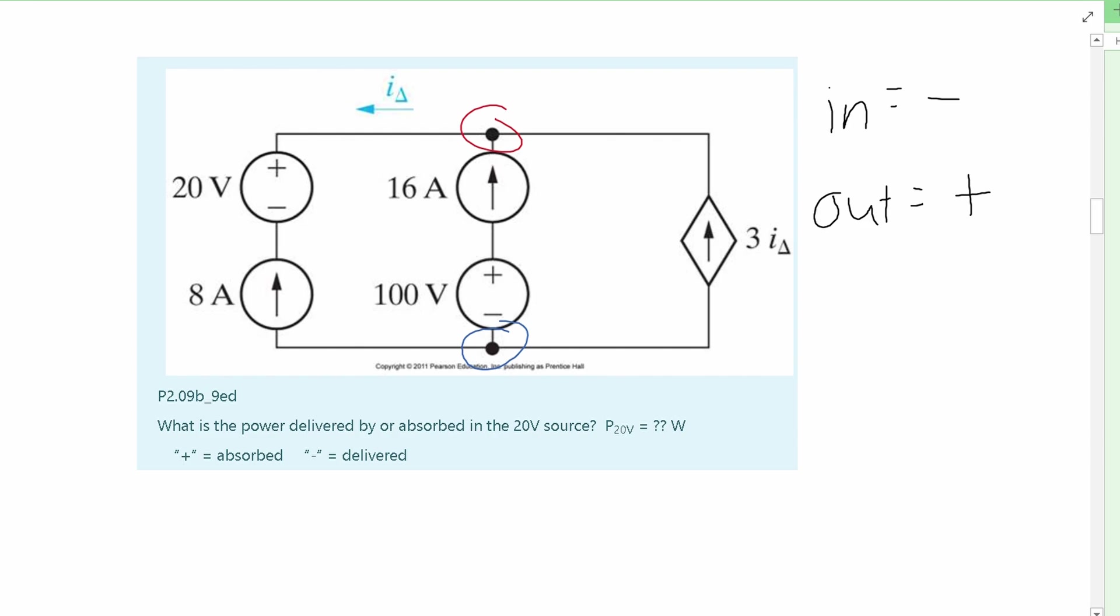First, we're going to look at this, our I delta, our single I delta. It is going out, so it's going to be a positive I delta. Now we look at our 16 amps, which is going into it. Since it's going into our node, it is going to be a negative 16 amps.